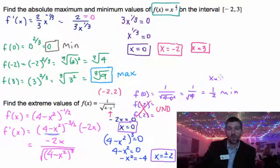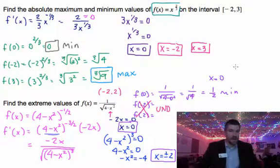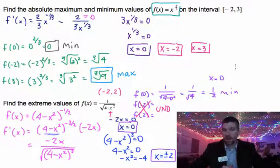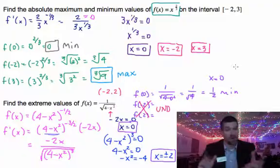And that occurs when x equals 0. So this last example, it's a little tricky. But all it is is take derivative, set top equal to 0, set bottom equal to 0, and you're off and running.